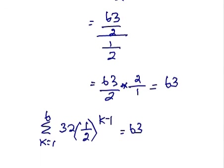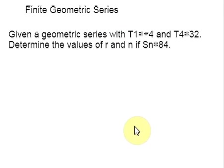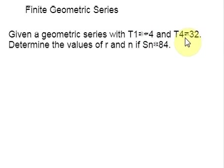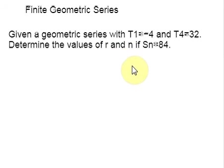In this example, we found Sn. Now let me take a different example. In our previous problem we found the summation. Here, the summation value Sn, T1, and T4 are given, and we are supposed to determine the values for R and n. As a first step, we are going to determine the values of A and R.